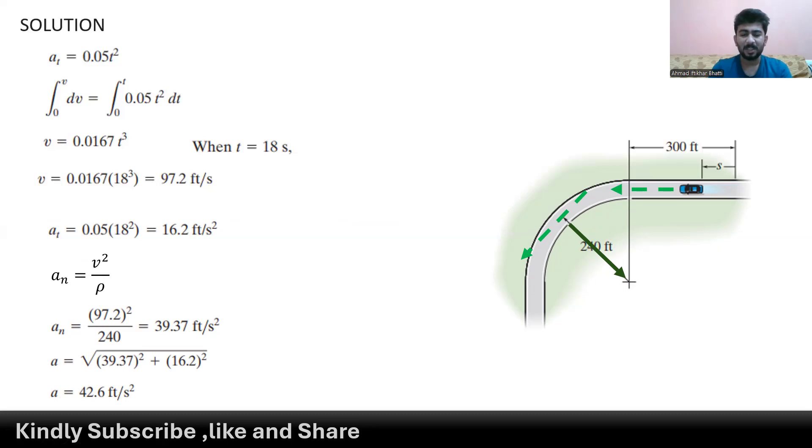To find the acceleration we can take the magnitude of the tangential acceleration and normal acceleration, so we get acceleration that is 42.6 feet per second squared.